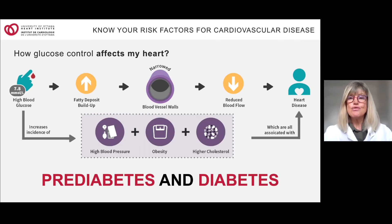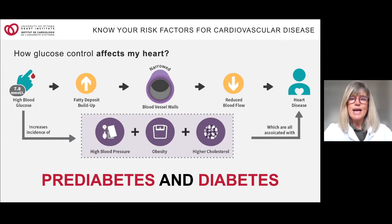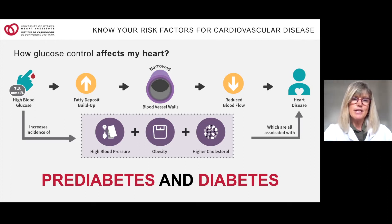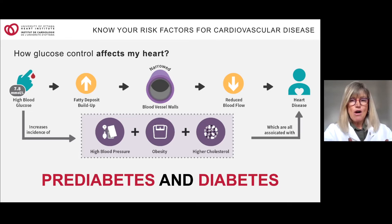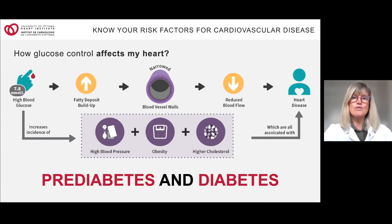Interestingly, the larger vessels in your heart are actually impacted first by elevated glucose levels. The elevated glucose irritates the walls of the vessels, again enhancing that buildup of fatty deposits. By maintaining a healthy body weight through regular exercise, healthy eating, and managing stress, you can greatly reduce your risk of developing prediabetes or diabetes. People with higher blood glucose levels also tend to have increased incidences of higher blood pressure, obesity, and higher cholesterol.